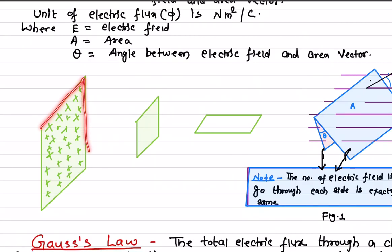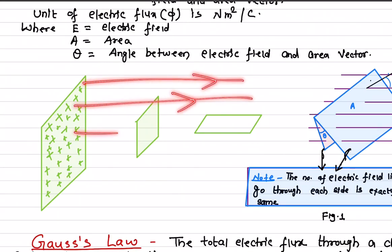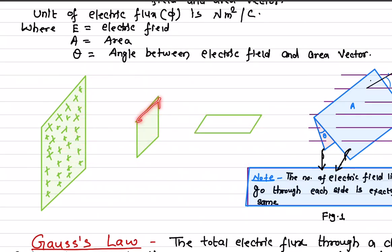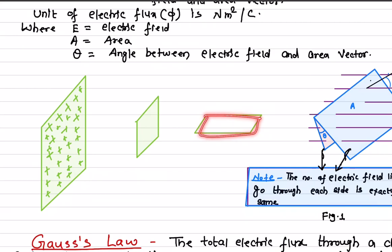Let's say you have a charged plane. Due to this charged plane, the electric field is always perpendicular to the surface. Then you have an area held parallel to the surface — this surface and this charged area are parallel. And this surface here is perpendicular to the charged plane.